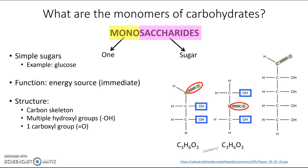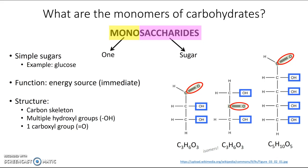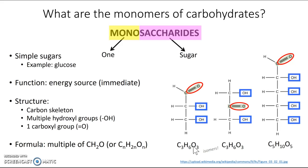One last example has a longer carbon skeleton, a few hydroxyl groups, and a carboxyl group, with a formula of C5H10O5. If you look at the different formulas, you might see a pattern: every monosaccharide has a formula that's a multiple of CH2O. So for however many carbons you have, there are twice as many hydrogens and the same number of oxygens as carbons.